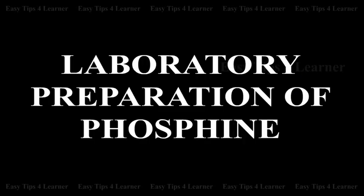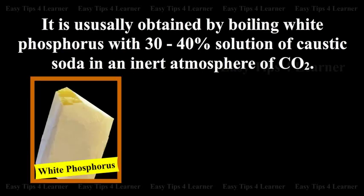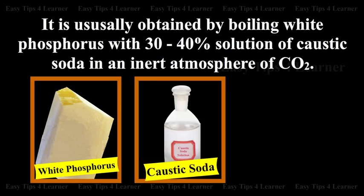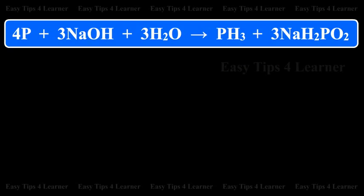Laboratory Preparation: It is usually obtained by boiling white phosphorus with a 30-40% solution of caustic soda in an inert atmosphere of carbon dioxide. The reaction is: 4P + 3NaOH + 3H2O gives PH3 + 3NaH2PO2 (sodium hypophosphite).